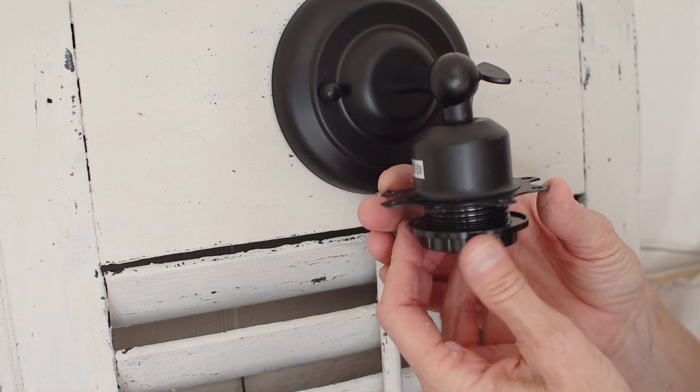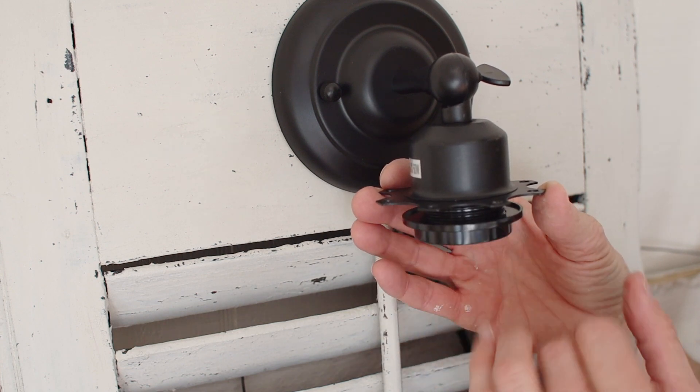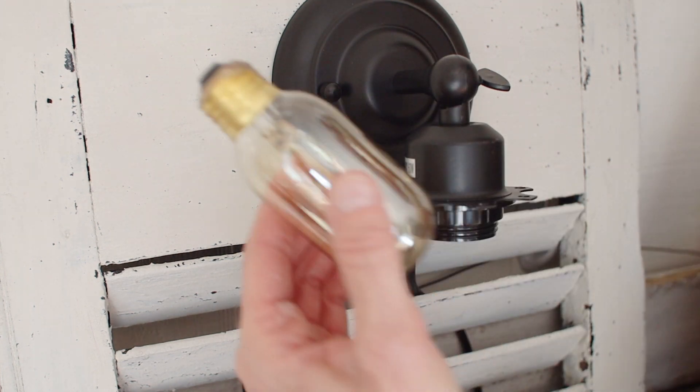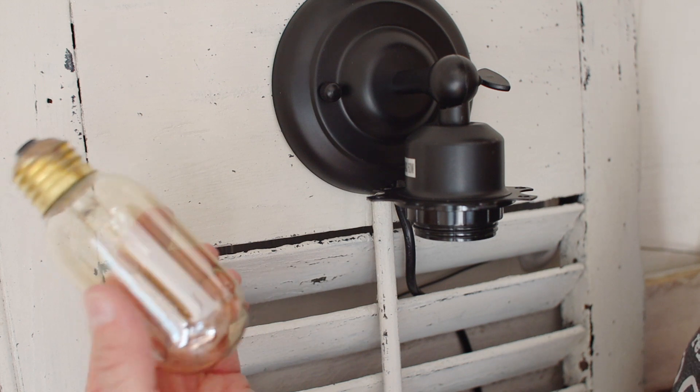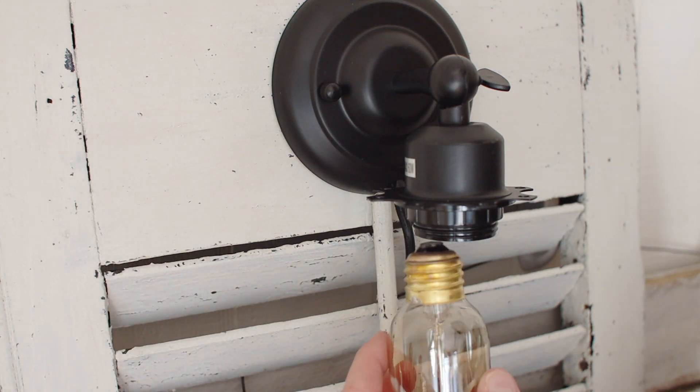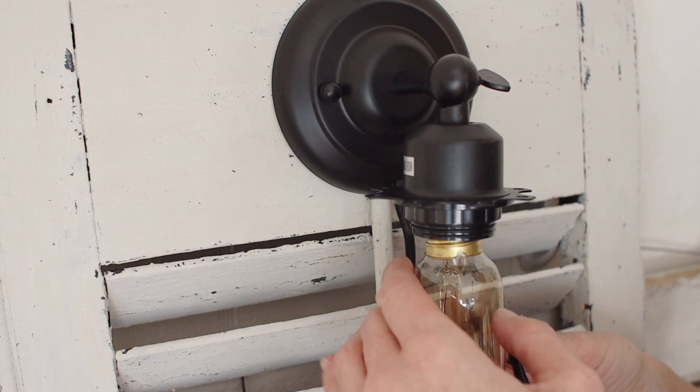So I'm going to take the plate, the plate is going to go right up here, and then this ring that screwed off screws back on, and that's what holds the plate. I'm going to use these Edison bulbs. I've got these online, they're a standard base and they fit this light very nicely.